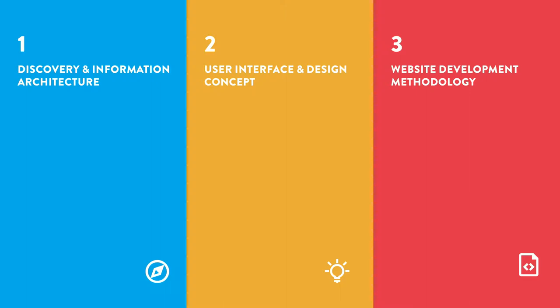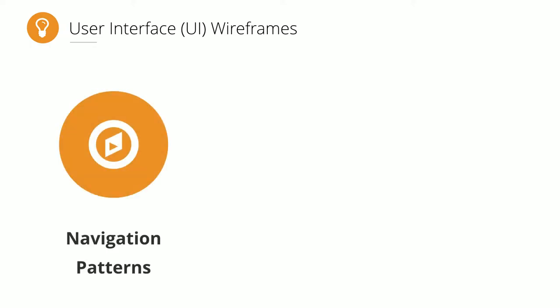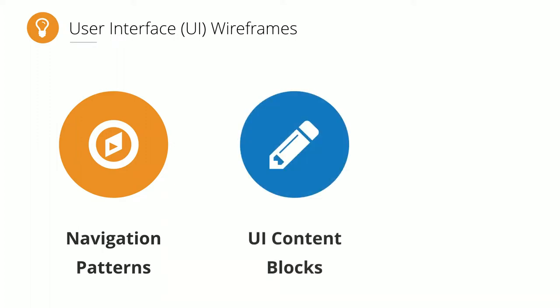That completes the discovery and information architecture portion of the project. We then move on to user interface and design concept, starting with wireframes. We're trying to accomplish three main things with wireframes: explore navigation patterns for the website now that we have empirical evidence our information architecture makes sense to our audience, and figure out the best way to create that navigation in an actual user interface.